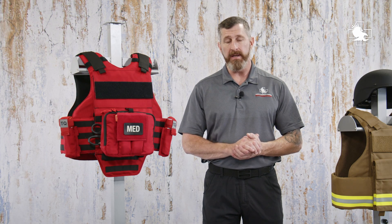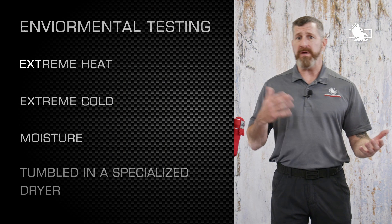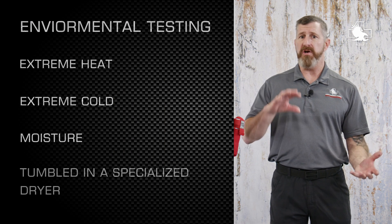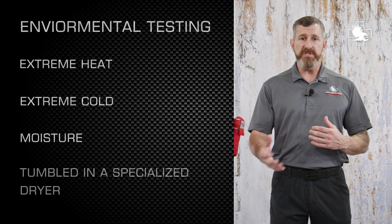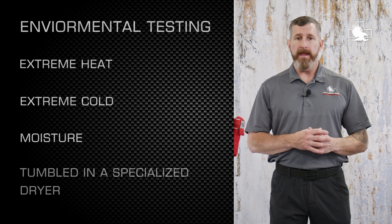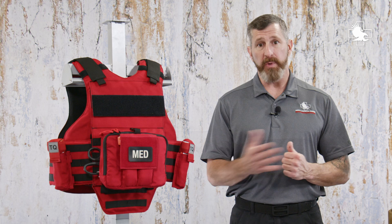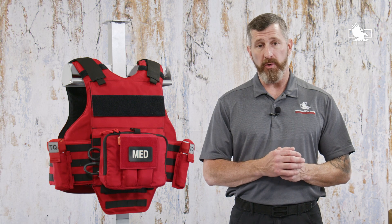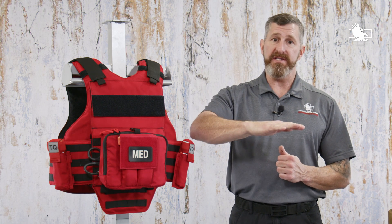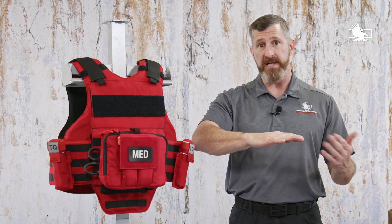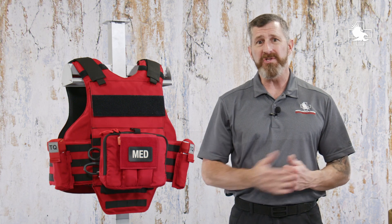In addition, soft armor is also tested for durability through environmental testing. The soft armor is exposed to extreme heat, extreme cold, and moisture. It's also tumbled in a specialized dryer to simulate usage over years and years. Finally, hard armor — rifle plates — are affixed to a pendulum and then dropped against a very hard surface in a scientific, controlled manner to ensure there's no cracking and that the plate will remain durable.